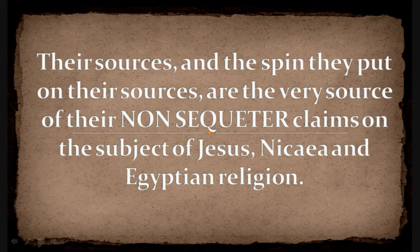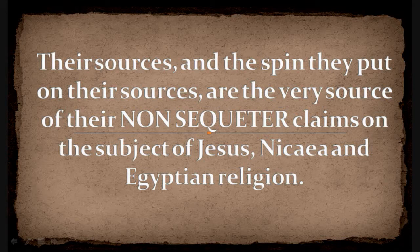Please listen up. It's their sources and the spin they put on their sources that are the very source of their own non-sequitur claims on the subject of Jesus, Nicaea, and religion. What does non-sequitur mean? It means that the conclusions you draw do not match your data. For example, I could say the reason why the sky is green is because the sky is really blue — that makes no sense. Your conclusions do not match anything you presented before it; whatever evidence you presented doesn't match your conclusion. That's what a non-sequitur is, and that's exactly what I've been trying to stress from the Hidden Colors material I've been covering.